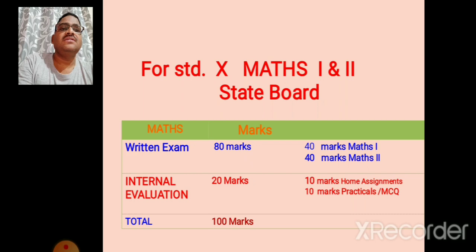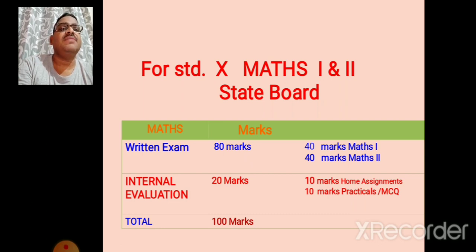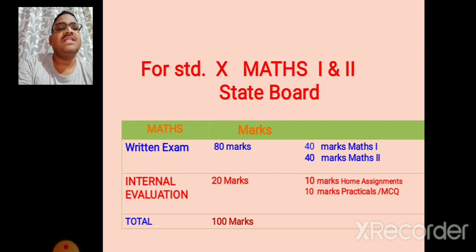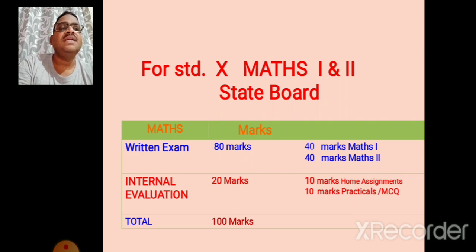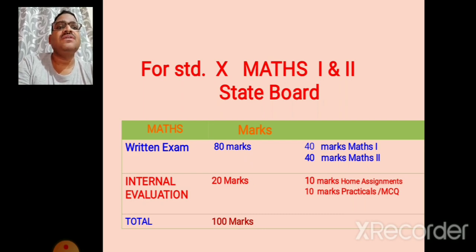For the state board students, there are two written papers of mathematics: Math First and Math Second, 40 marks for each. That is the total written exam of Mathematics First and Mathematics Second is 80 marks. Then 20 marks is for internal evaluation, out of which 10 marks is for home assignments and 10 marks for practicals or MCQ. That is the total exam of mathematics is 100 marks.